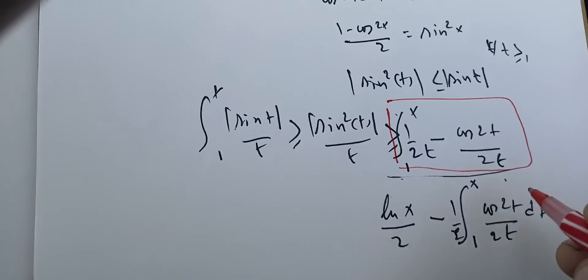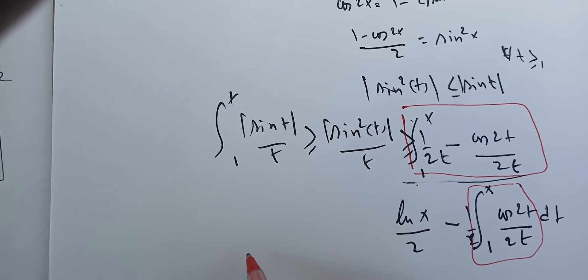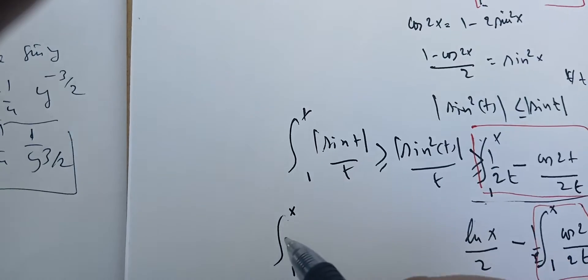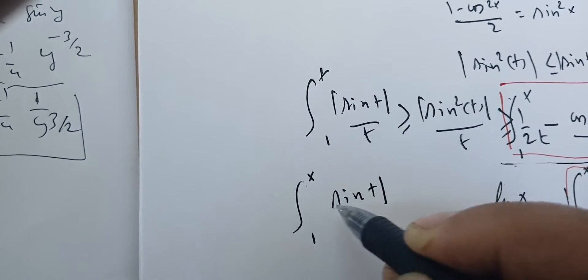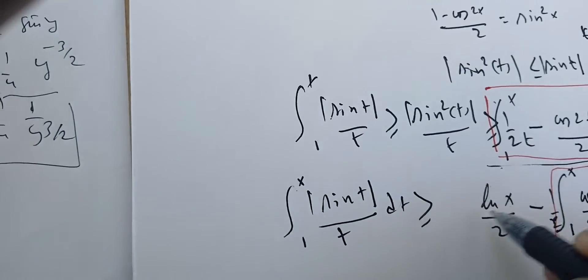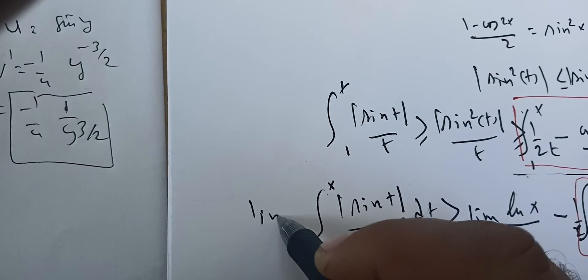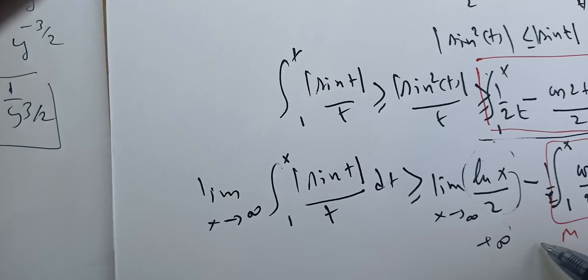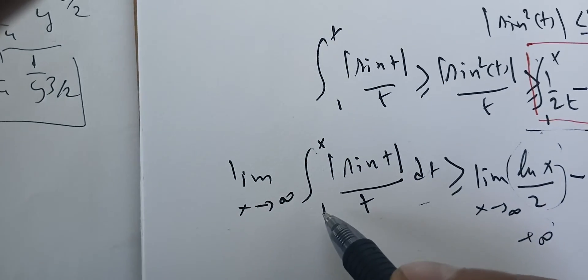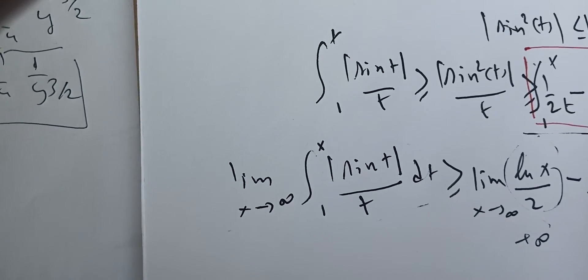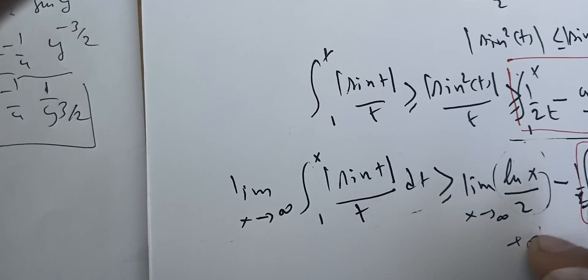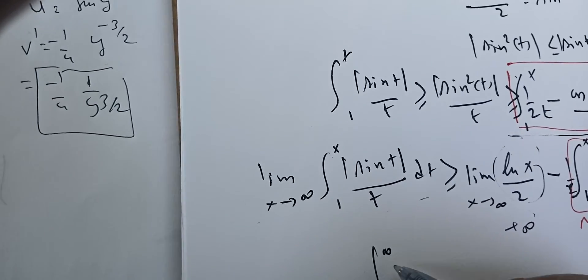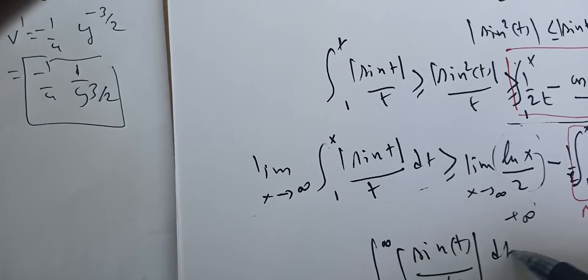The integral of cos(2t)/(2t) dt is convergent — we know this from a previous result — so we give it the value m. Taking the limit as x goes to infinity, the lower bound becomes (ln x)/2 - m, which goes to infinity. Therefore the integral of |sin(t)|/t from 1 to infinity is greater than infinity, so it diverges.